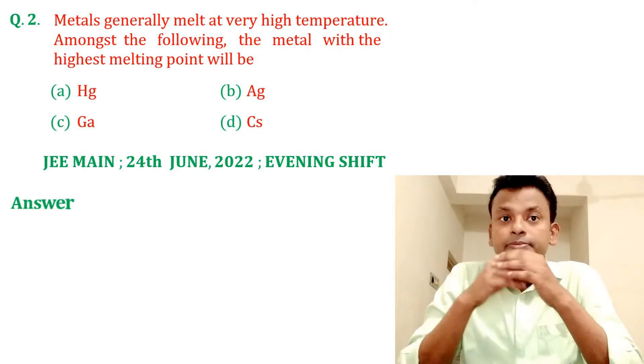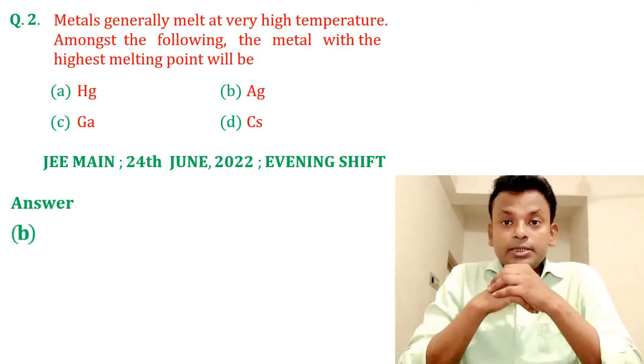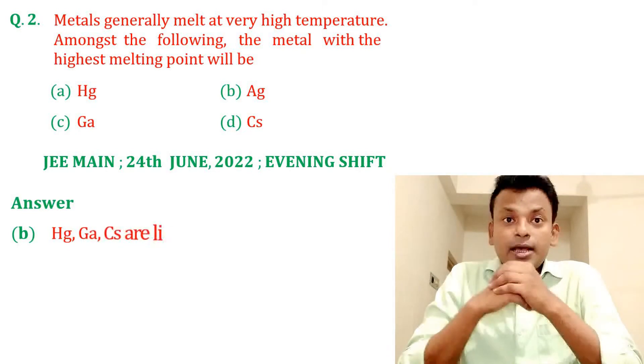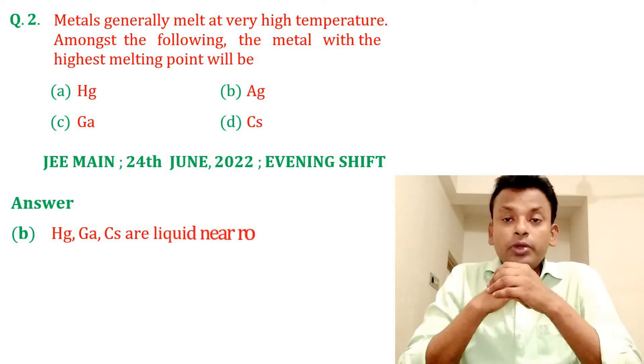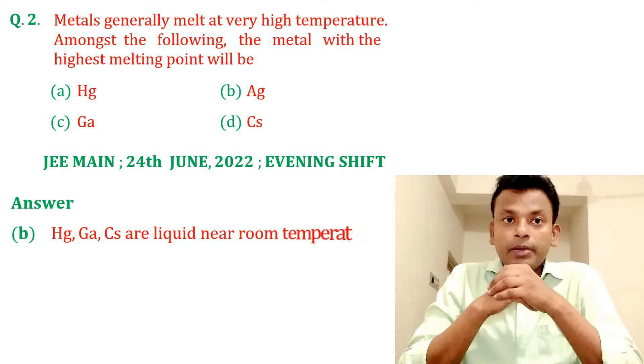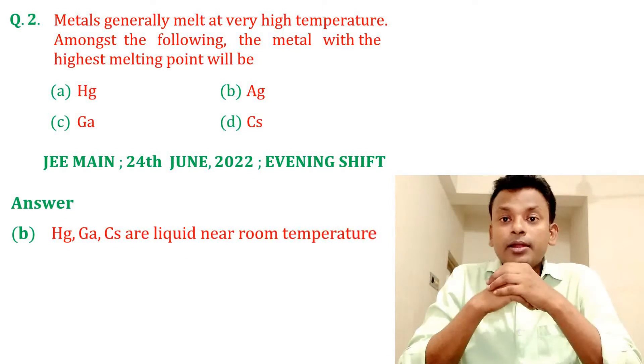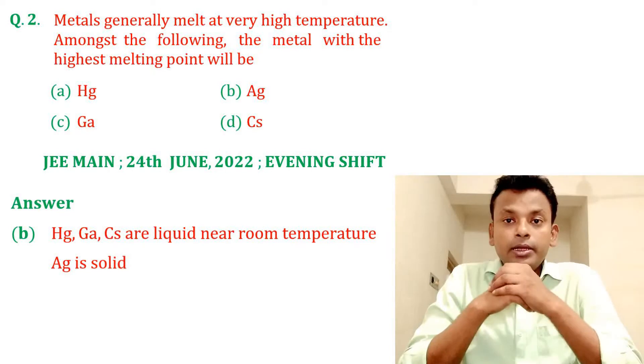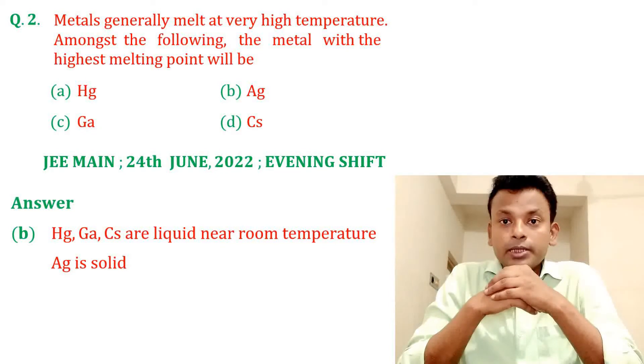Hg, Ag, Ga, Cs are liquid near room temperature, while silver is solid at room temperature.